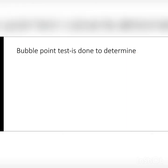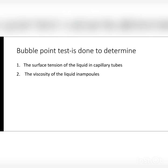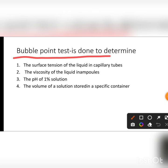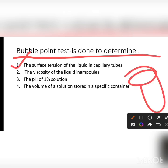Next question: the bubble point test is done to determine — options are the surface tension of the liquid in capillary tubes, the viscosity of the liquid in ampules, the pH of a 1% solution, or the volume of a solution stored in a specific container. The bubble point test is done to determine the surface tension of a liquid in capillary tubes.